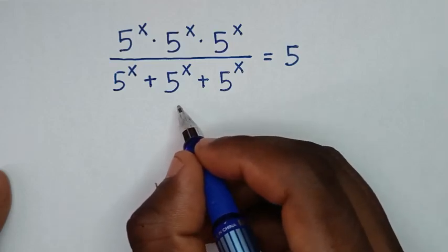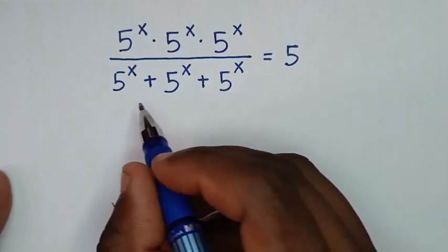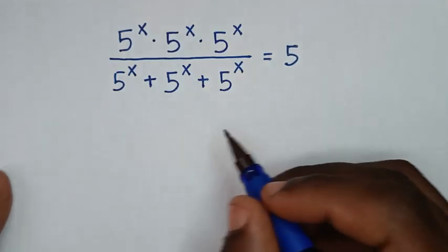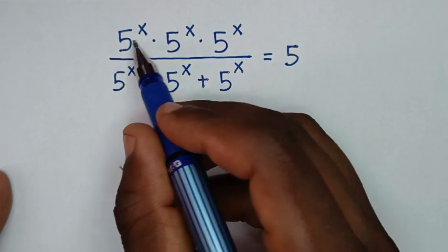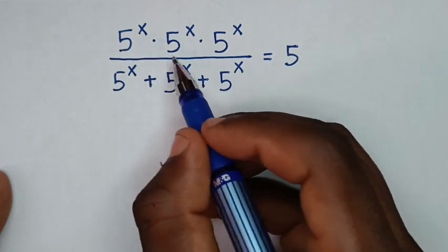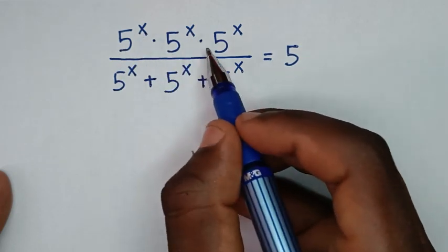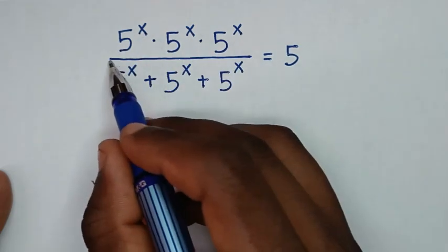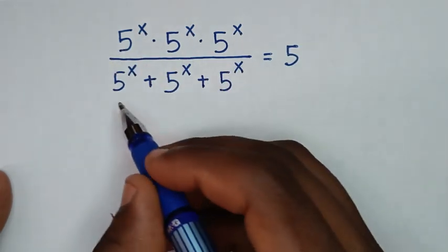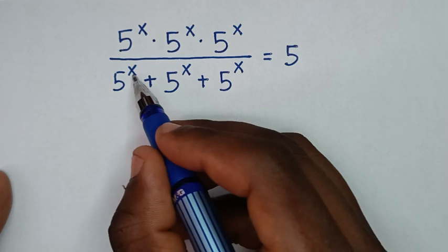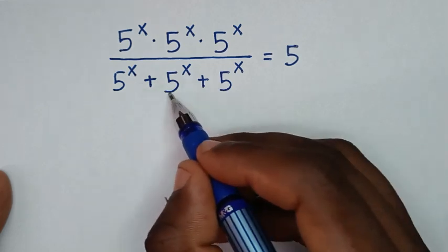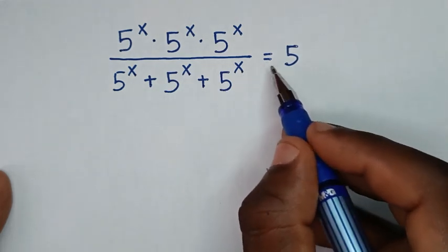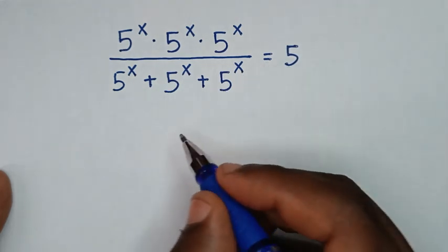Hello, you are welcome to solve this math problem of 5 power of x times 5 power of x times 5 power of x, over 5 power of x plus 5 power of x plus 5 power of x, is equal to 5.